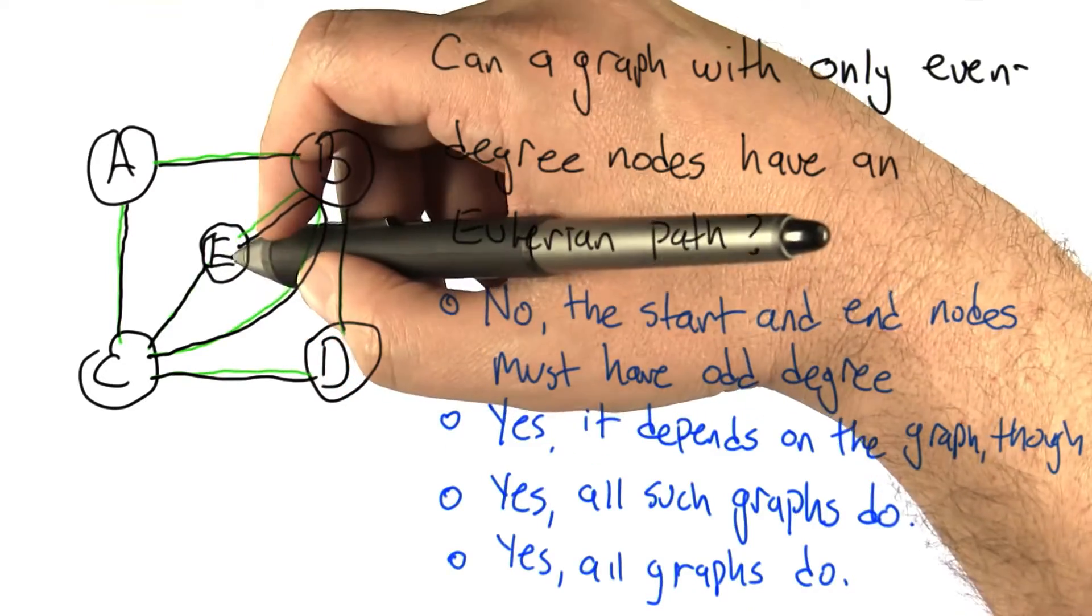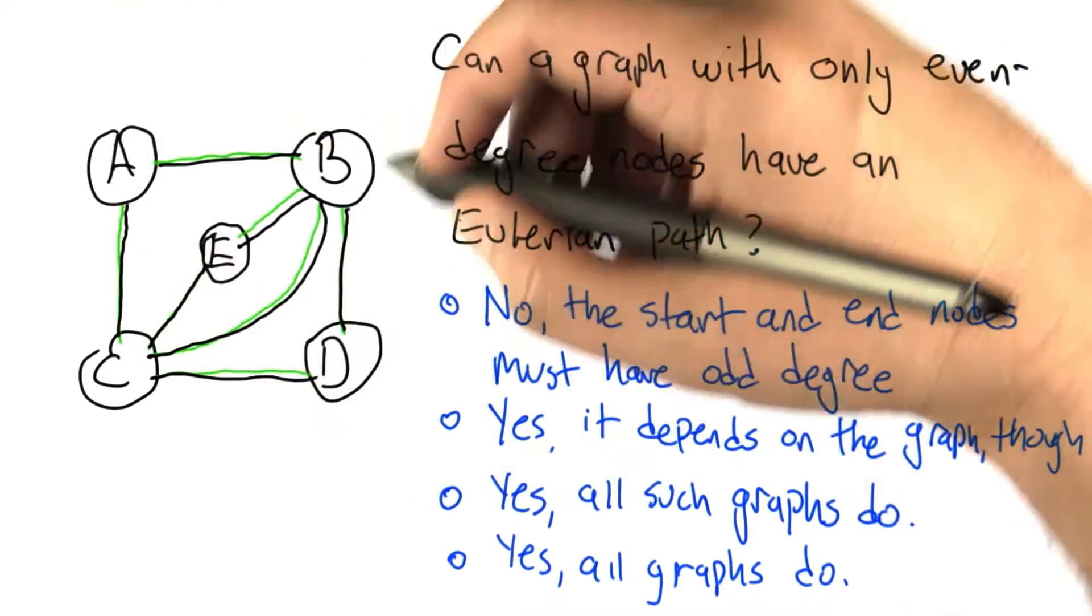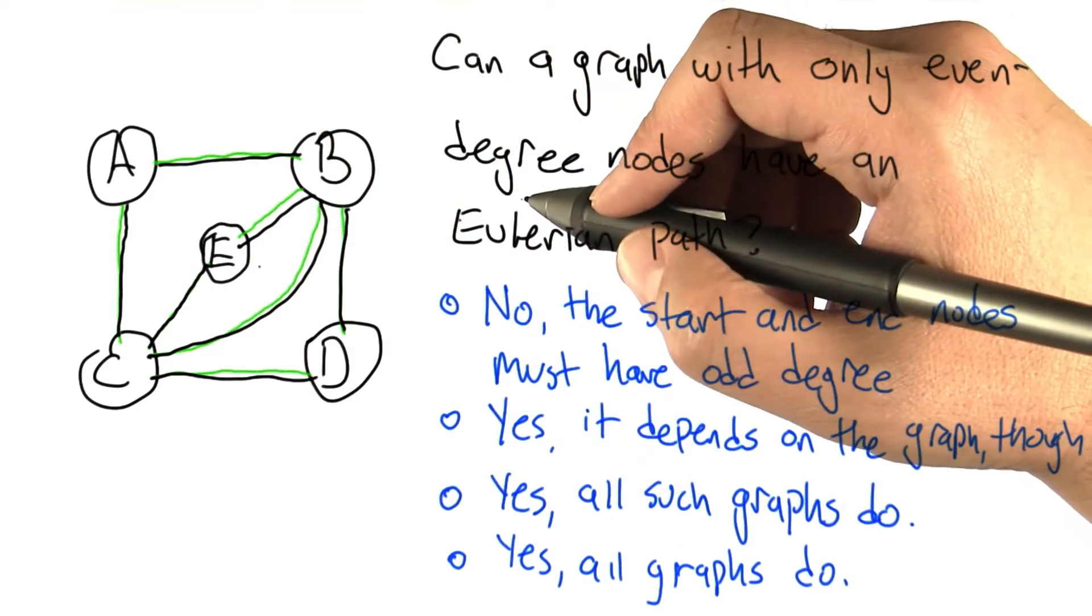because we go into it. Each time we go into it, we come out, except for the first time where we go out, but then the last time we come back in. So everything matches up, and you end up with even degree.